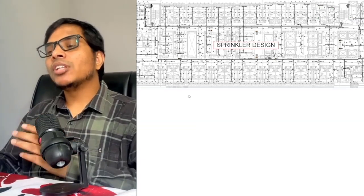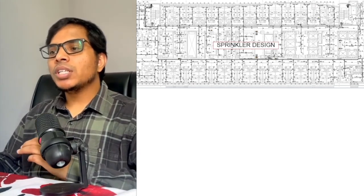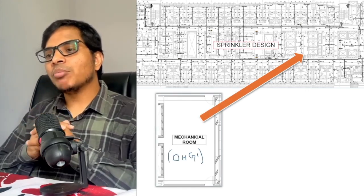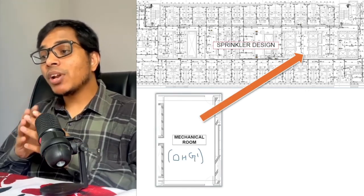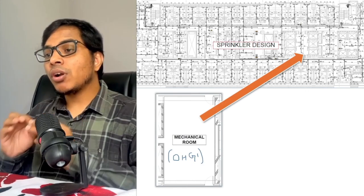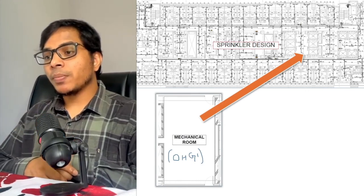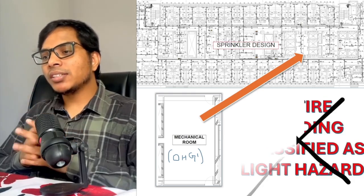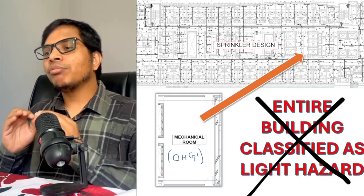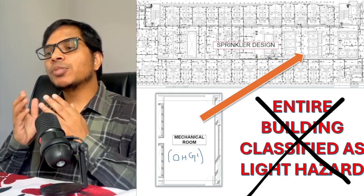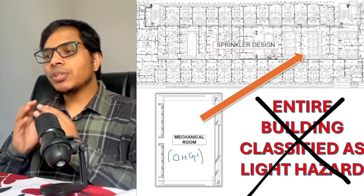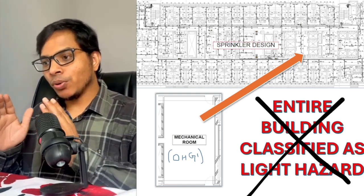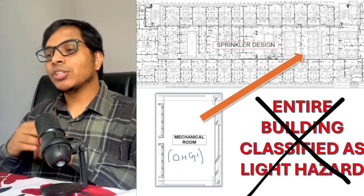Here's what they missed. They assumed this was a standard office building, but this building has a mechanical room, and as per NFPA 13 it does not come under light hazard occupancy. The engineers classified the entire building as light hazard, but that's not what NFPA 13 actually requires. As per NFPA 13, occupancy classification must be determined for each area, not the building as a whole — because of which the entire scenario changed.